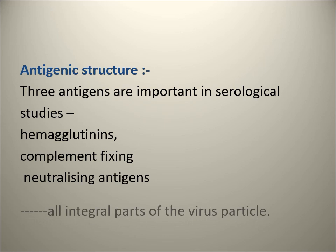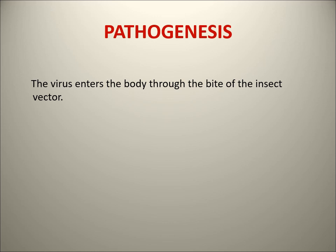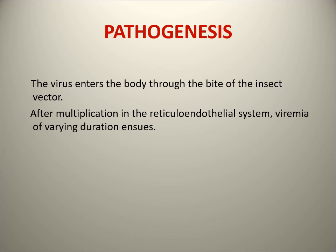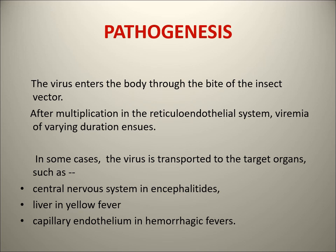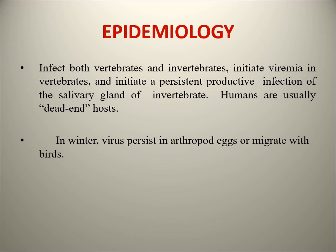Pathogenesis of arboviruses: the virus enters the body through the bite of the insect vector. After the bite, following multiplication the virus reaches the reticuloendothelial system, multiplies there, and then viremia occurs. The viruses then reach their target organs depending on which disease is caused - for example, the central nervous system is affected in encephalitis, the liver in Yellow Fever, and capillary endothelium in hemorrhagic fever.